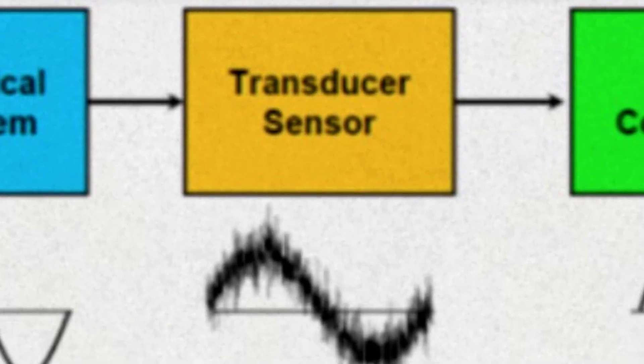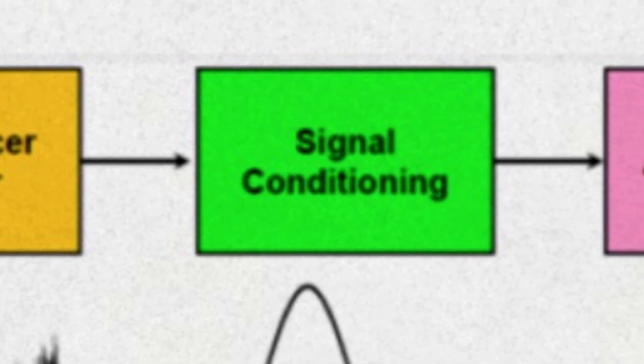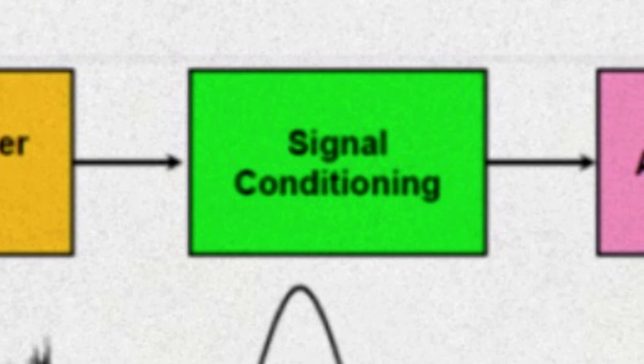The second block represents transducers or sensors. Transducers are the first thing these physical quantities come in contact with in a data acquisition system. A transducer converts the physical parameters to electrical signal. Then these signals are fed to signal conditioner.